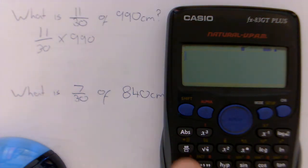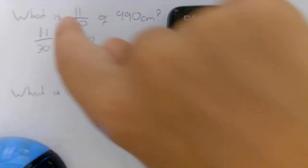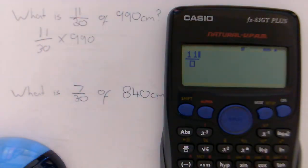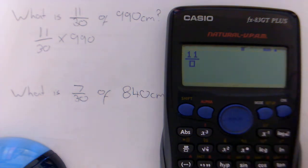So to do this we need to press our fractions button just here. And now this gives us an empty fraction. So we see we're on the top row, our numerator, we need to type in 11. And then we press the down key and that gives us our denominator where we of course type in 30.